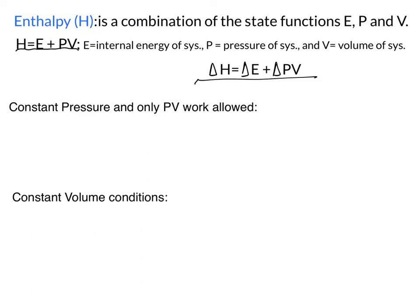We're going to look at enthalpy with respect to two conditions: constant pressure and constant volume. Let's see how enthalpy is related to Q, the heat, in these various conditions. We'll bring this back to our change in internal energy equation, looking at work being only pressure-volume work.